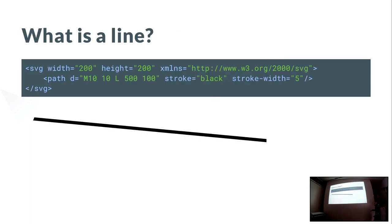But first, let's ask: what is a line? Everybody probably has an idea. This is an example of a line — pixels on the screen. And up here it's an SVG format. You might regard this code also as a representation of a line. These are probably the two lines you are familiar with when you think about computers and lines.